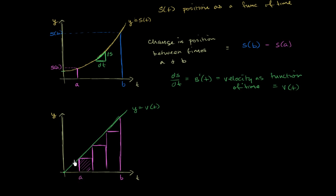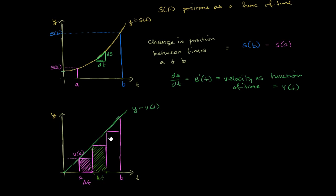What is the area of each of these rectangles an approximation for? This first rectangle has height v of a — your velocity at time a — and width delta t, a change in time. So the area is velocity at that moment times change in time, which gives your change in position. This is an approximation of your change in position over this time interval. The next rectangle approximates your change in position over the next delta t, and so on.